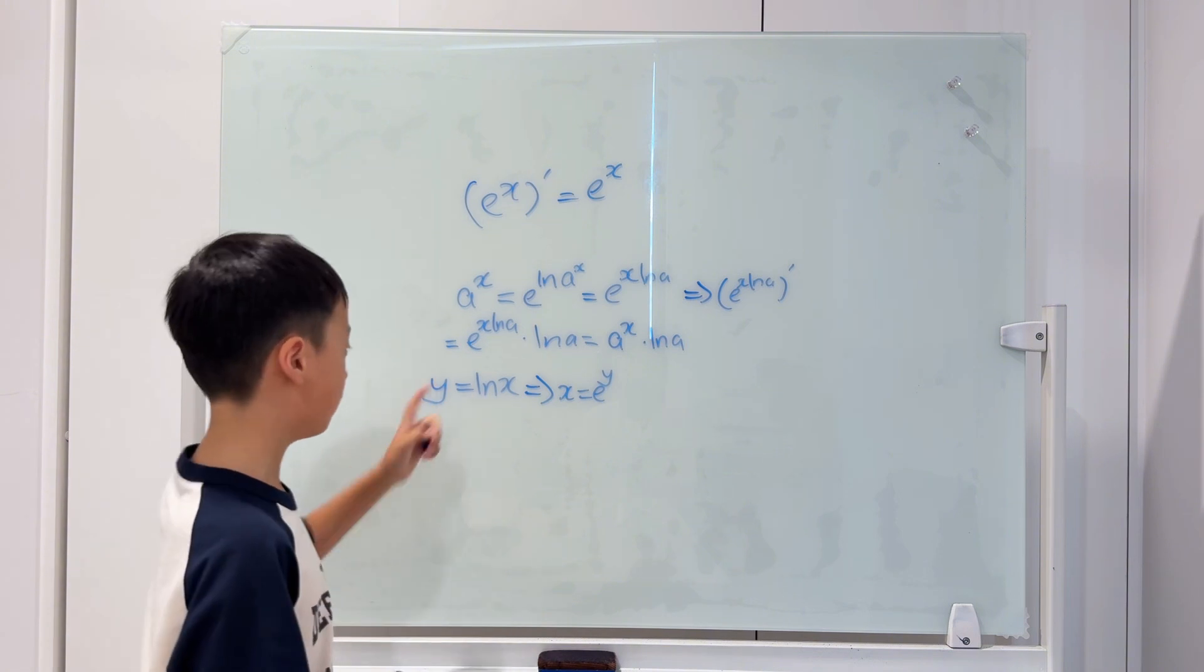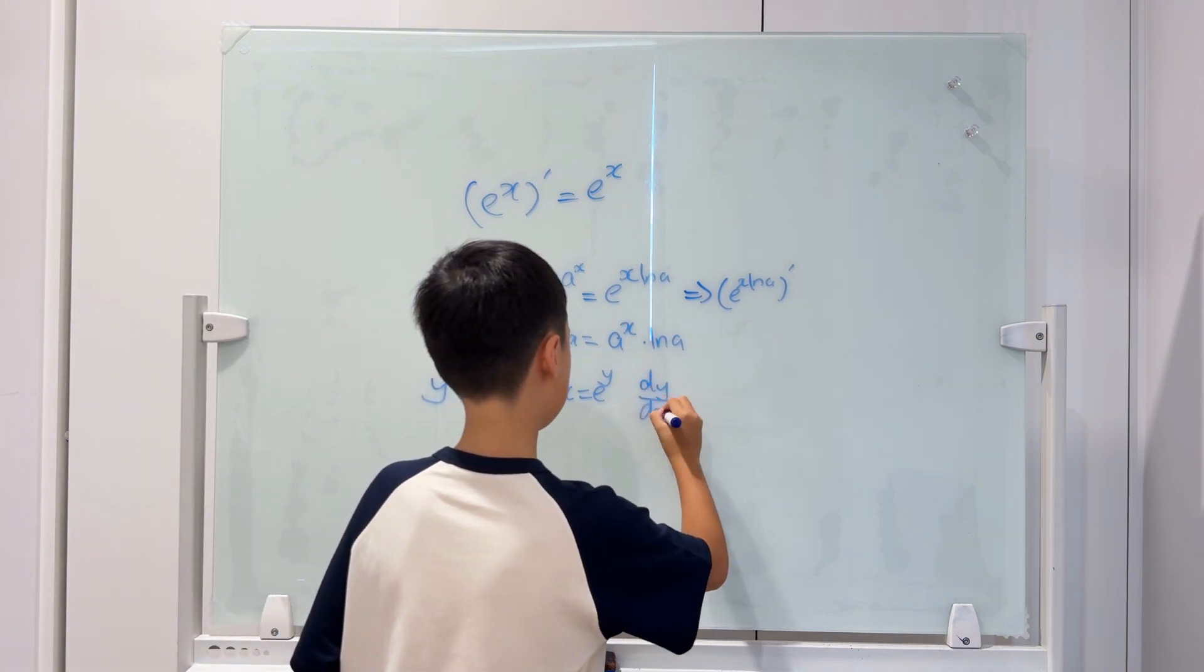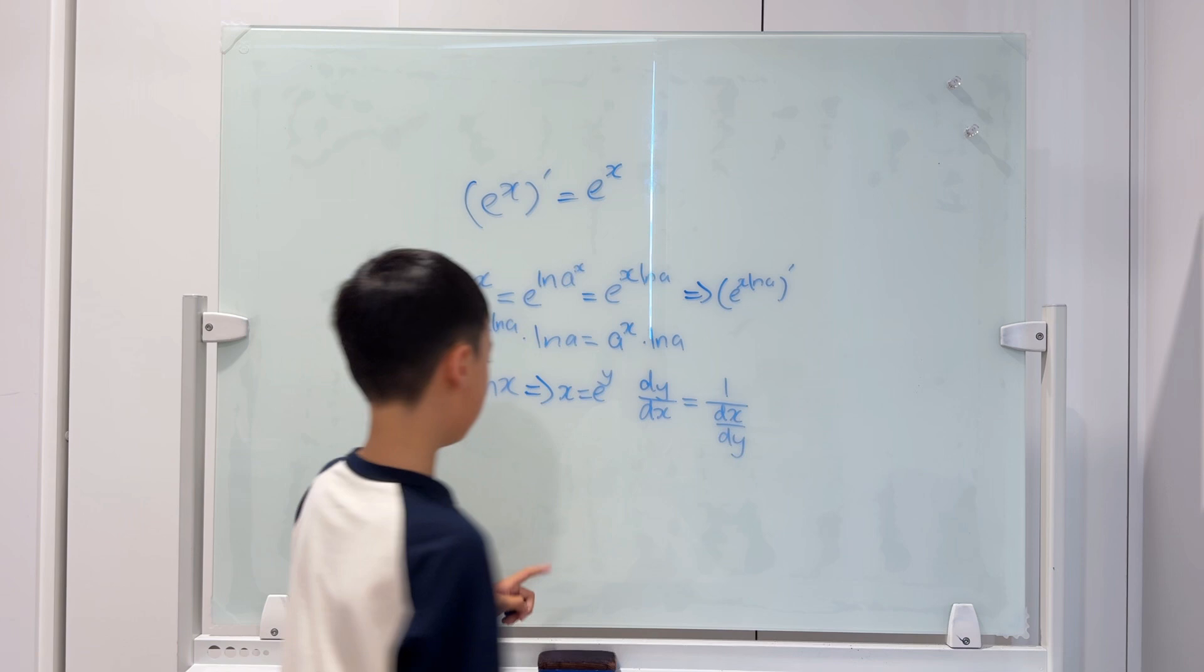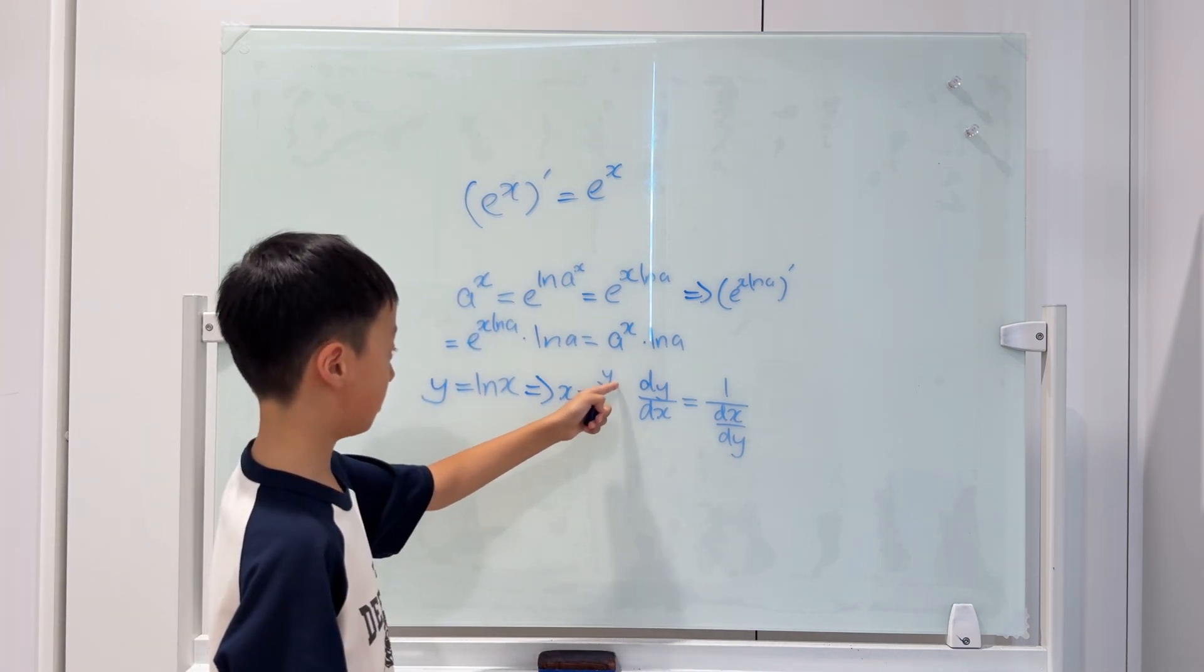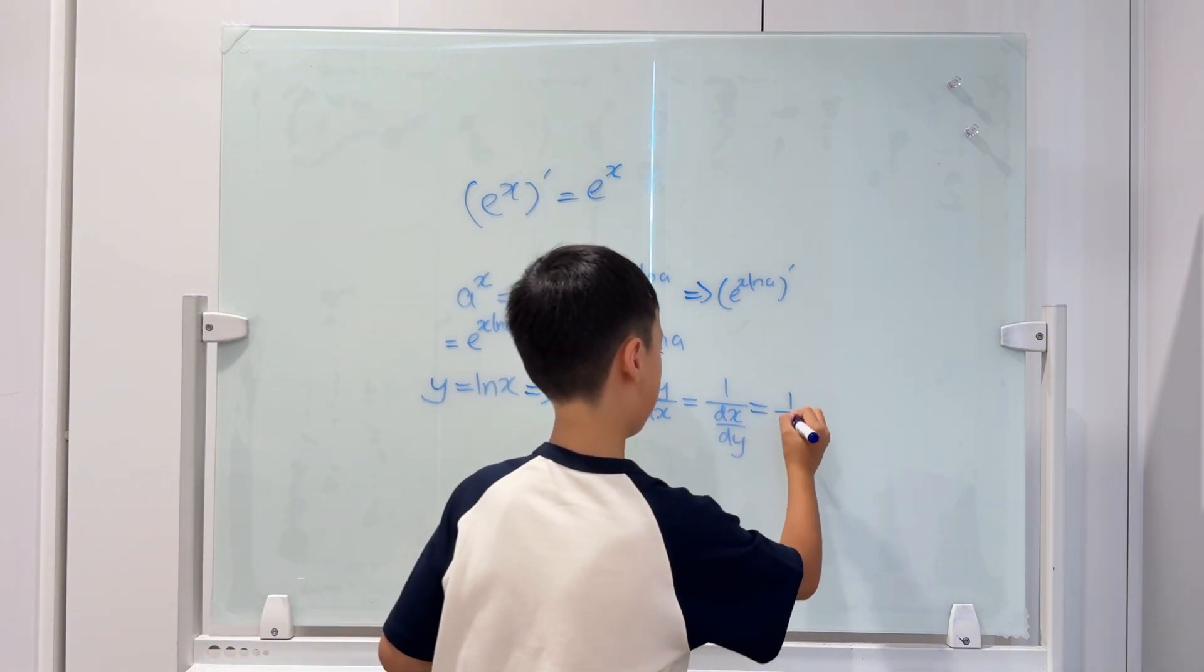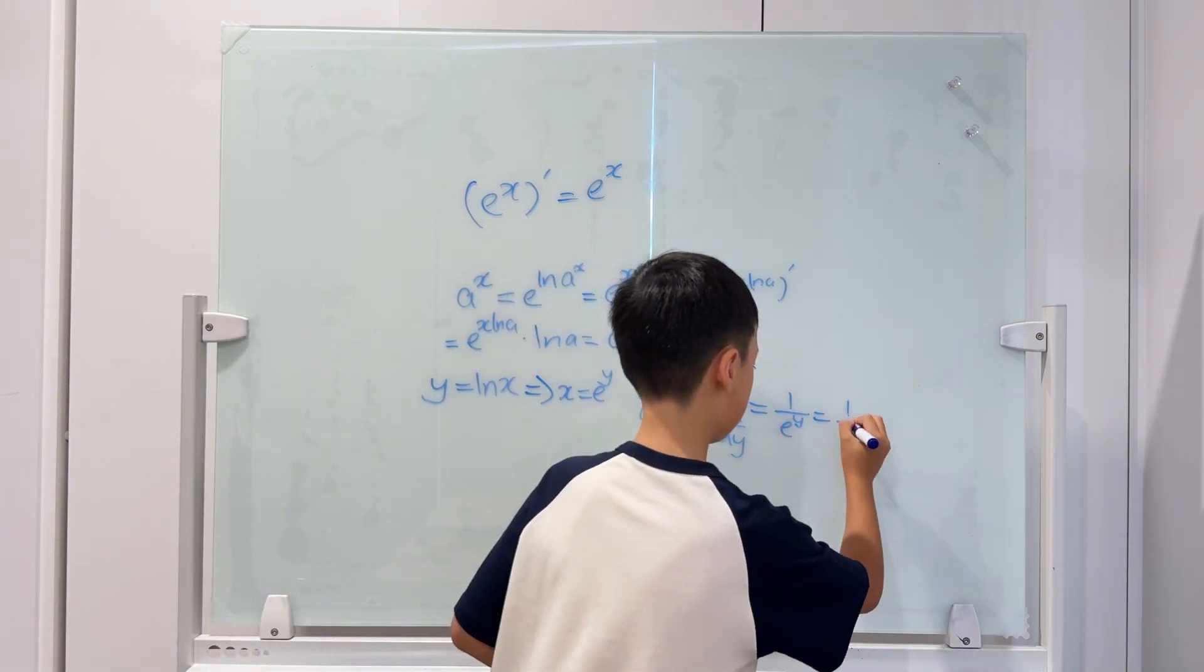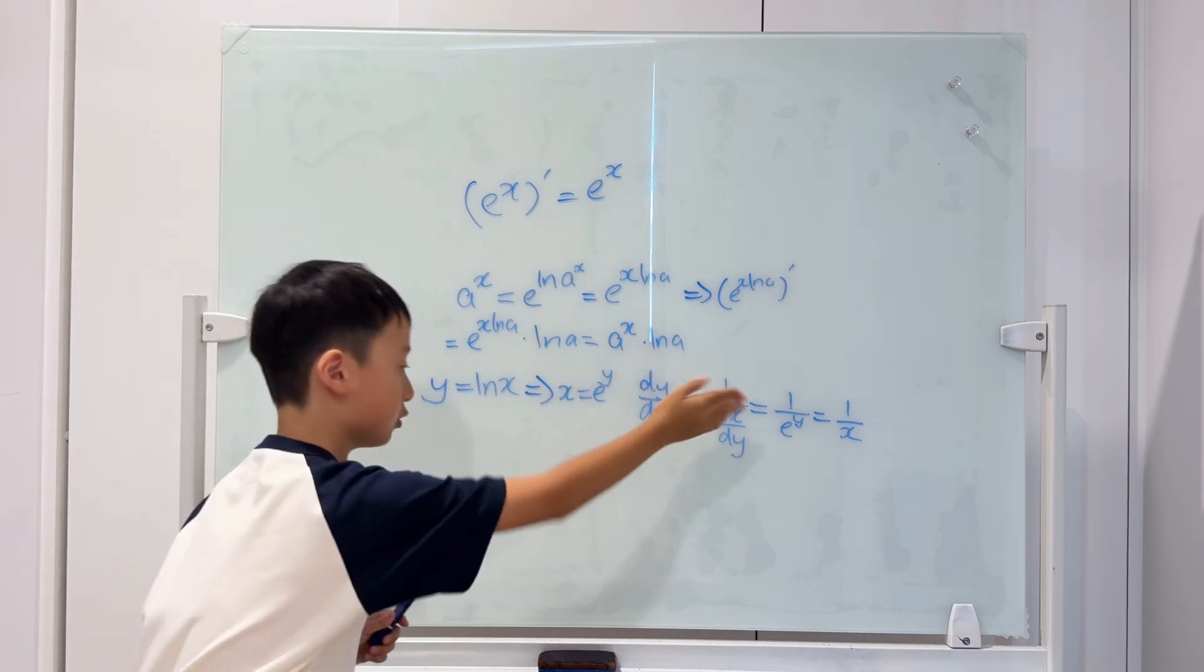We still need to figure out dy over dx. dy over dx equals 1 over dx over dy. dx over dy is just the derivative of e to the power of y. And we already know. It equals 1 over e to the power of y. And e to the power of y is just x. So, the derivative of ln x equals 1 over x.